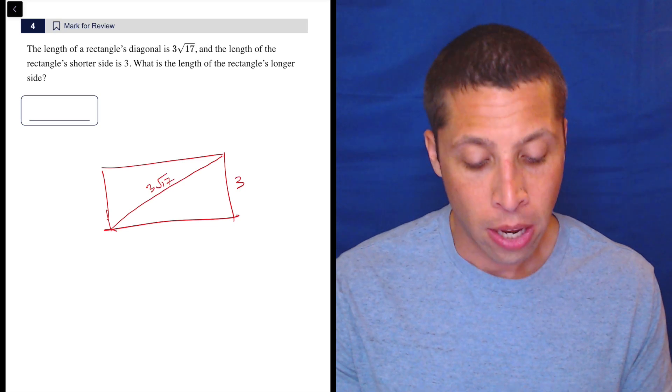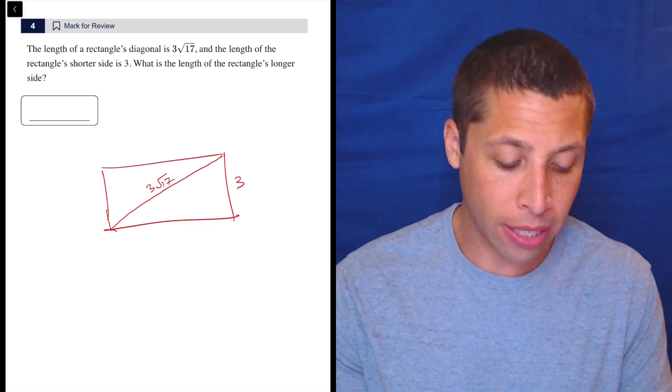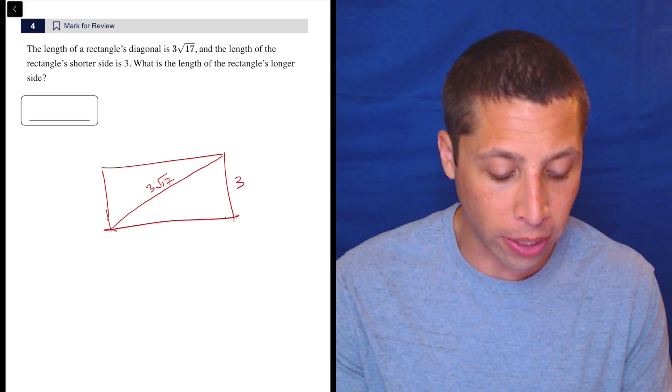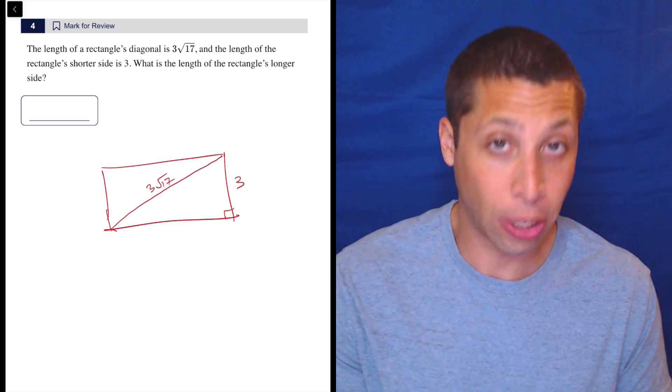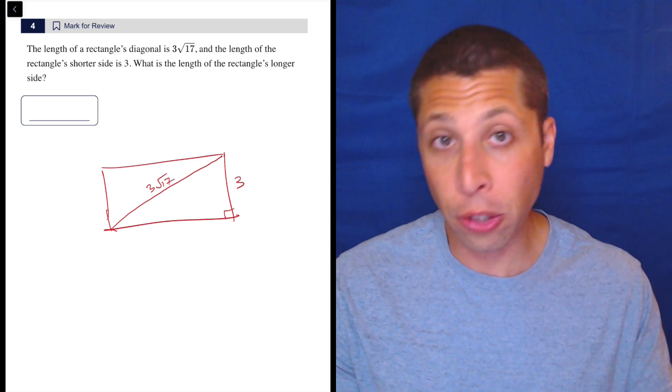Okay, so we can just recognize here, hopefully, that if it's a rectangle, we have a 90-degree angle. So this is a right triangle, and we could use the reference chart. They do give us this formula, but you probably should know that...